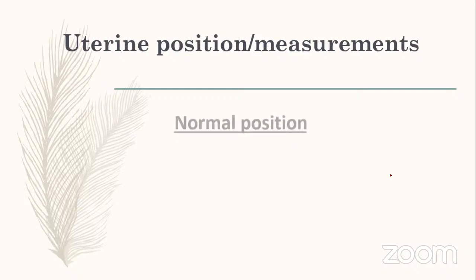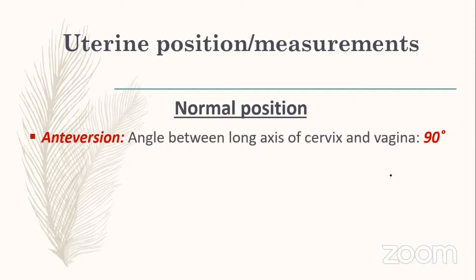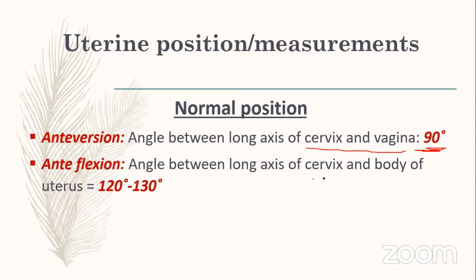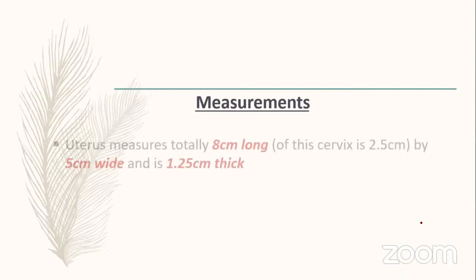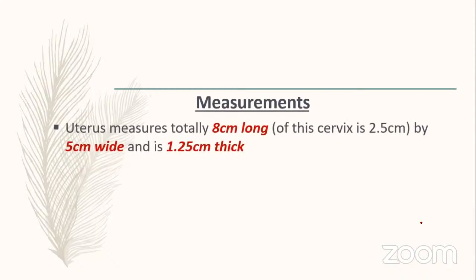Normal position of the uterus is anteversion. The angle between the long axis of the cervix and vagina is 90 degrees. Anteflexion is the angle between the long axis of the cervix and the body of the uterus — 120 to 130 degrees. The uterus usually inclines to the right (dextrorotated) while the cervix is inclined to the left (levorotated).